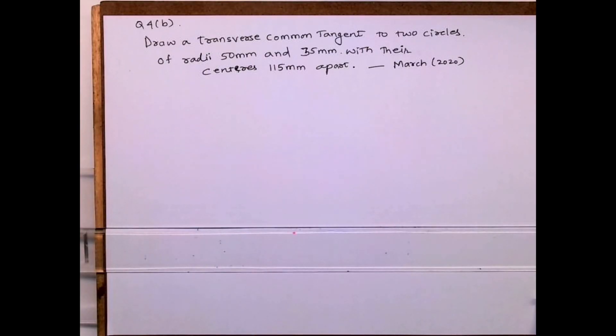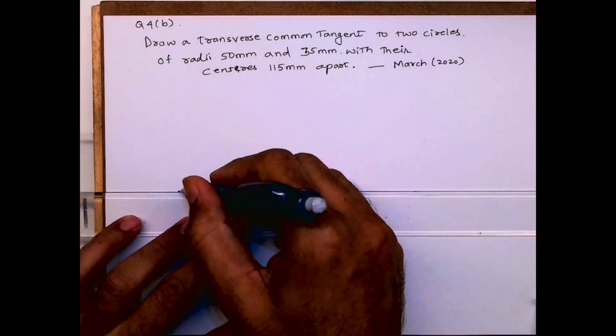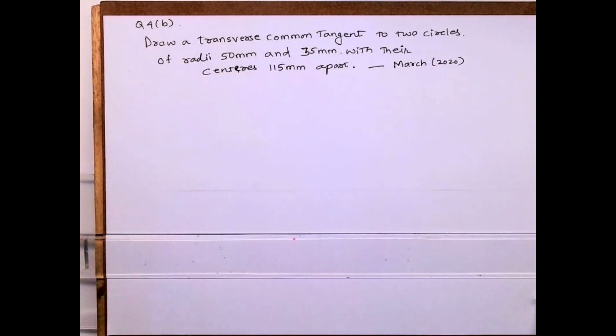Welcome to technical drawing. Today we'll see how to draw a transverse common tangent to two circles of radii 50mm and 35mm with their centers 115mm apart. This is March 2020 sum from ICIC.